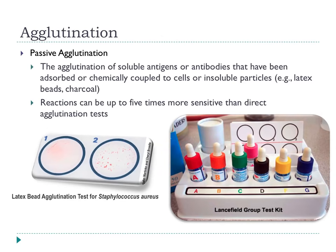One example of immunological methods is the agglutination approach, where antibodies or antigens are stuck onto insoluble particles such as latex beads. In a latex bead agglutination test for Staphylococcus aureus, a smooth suspension of particles shows nothing happening. When Staphylococcus aureus is added, it causes all the particles to clump together as they become cross-linked with immunoglobulins on the surface — giving a very clear, straightforward positive reading.